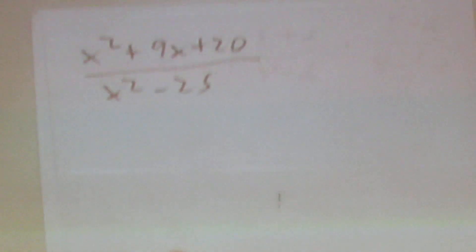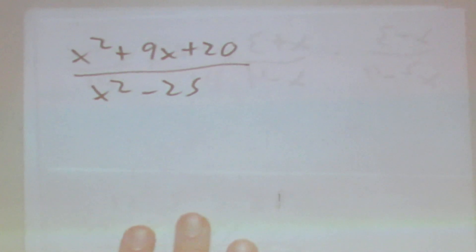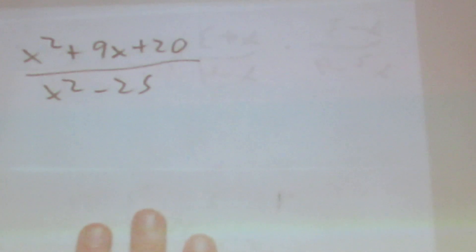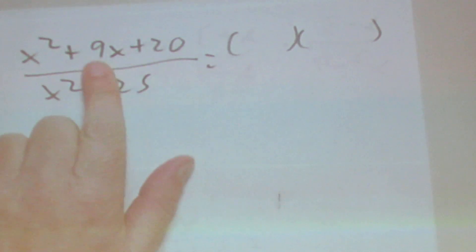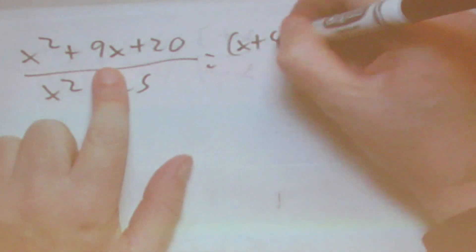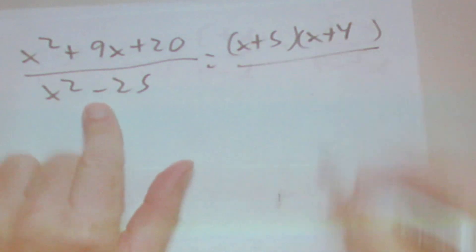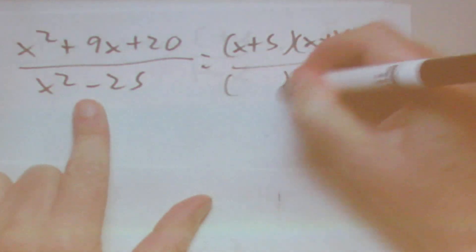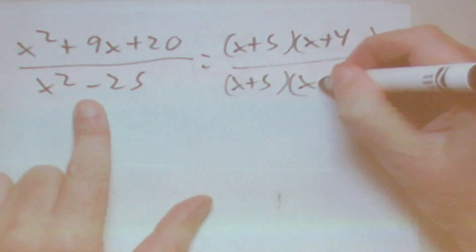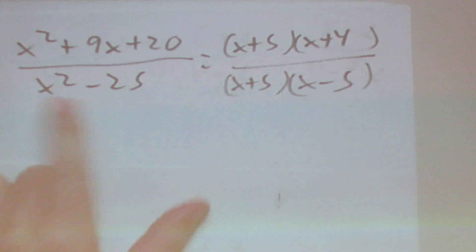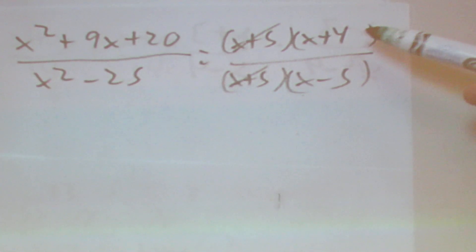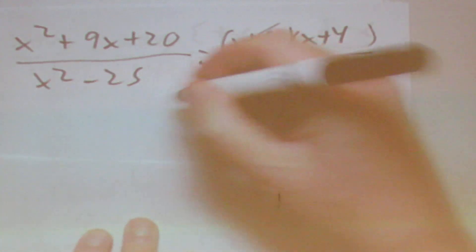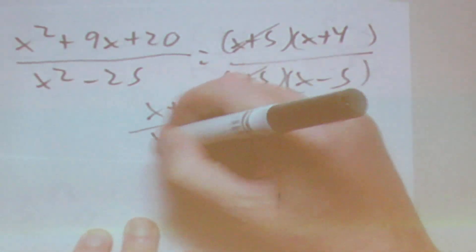Next, we have x squared plus 9x plus 20 over x squared minus 25, so we need to factor both. The factors of 20 that add up to 9 give us x plus 5 and x plus 4 on top. The denominator is a difference of two squares, so it factors to x plus 5 times x minus 5. We cancel the x plus 5s, and we're left with x plus 4 over x minus 5.